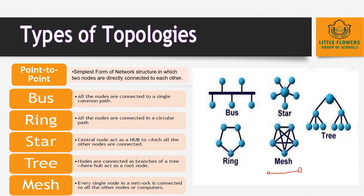In bus topology, all the nodes are connected to a single common path. The main cable acts as a backbone of the network and transmits data in one direction. The main cable is the road to which all nodes are attached — this is bus topology.